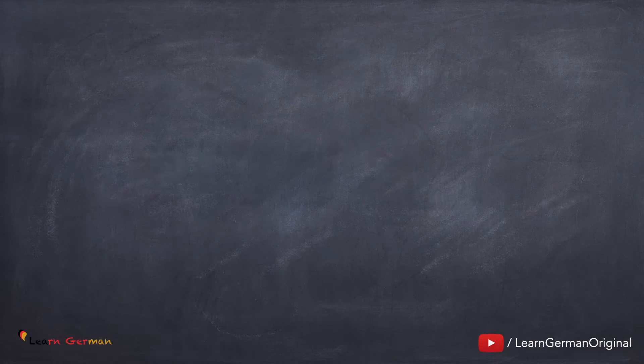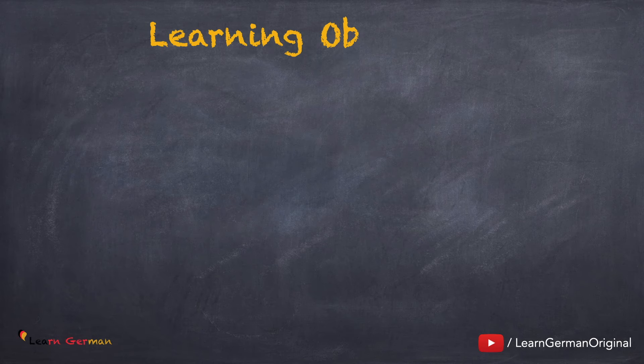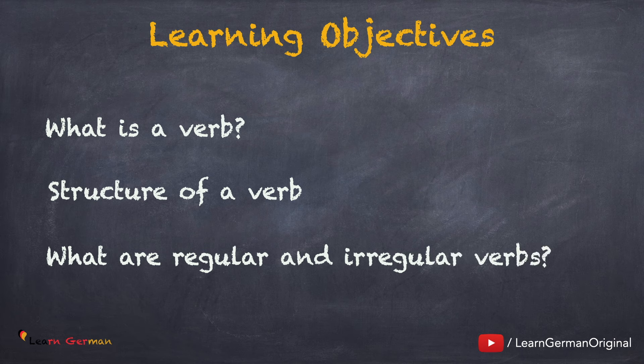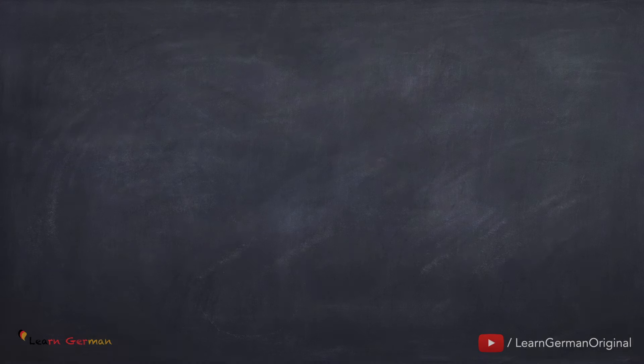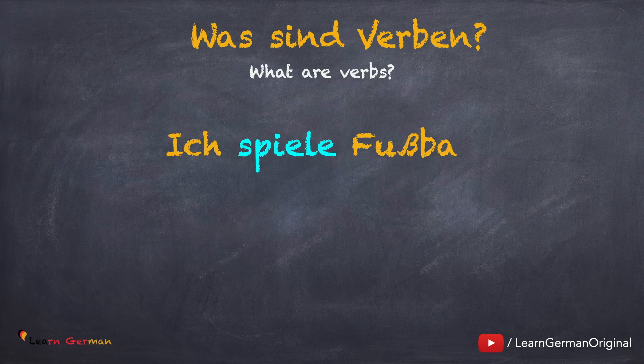So let's begin. Lektion dreizehn — was ist ein Verb? What is a verb? The learning objectives of this lesson: we will first discuss what a verb is, followed by its structure. Finally, you will learn what regular and irregular verbs are.